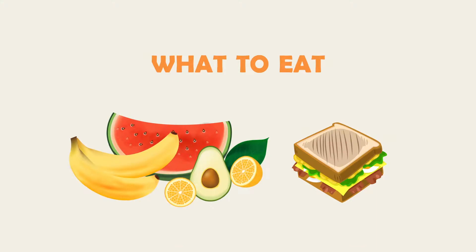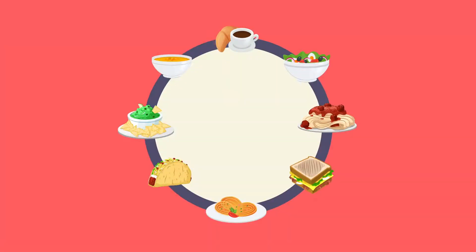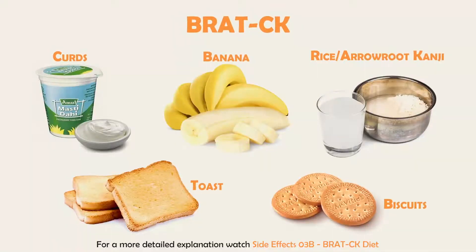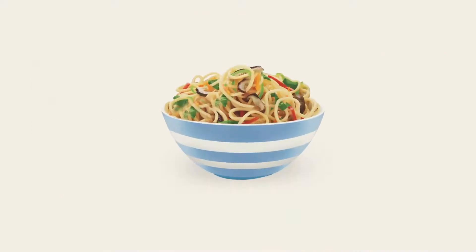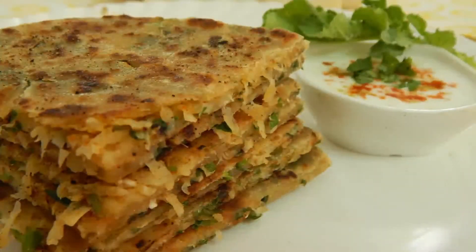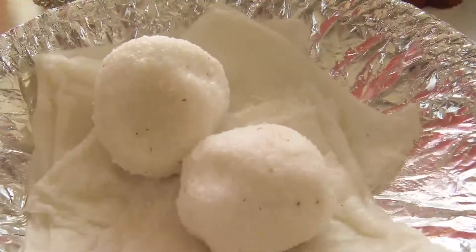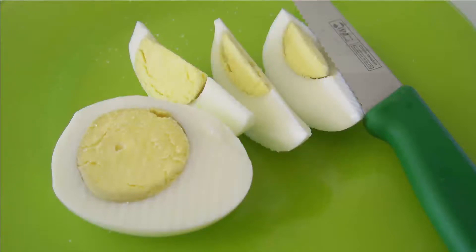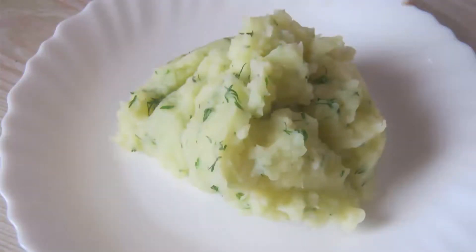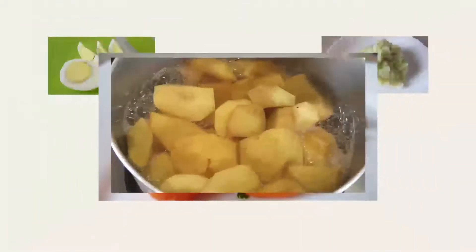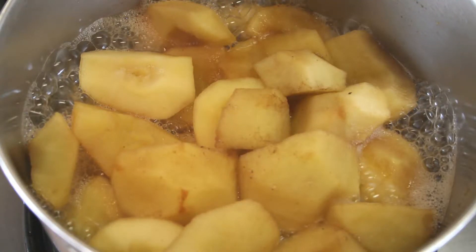Eat 6 to 8 small meals each day. Eat food at or near room temperature. Follow the BRAT CK diet. Other good options are noodles, poha, any preparation made out of wheat or rice flour, soy milk, hard-boiled eggs, boiled or mashed and baked potatoes without skin, boiled cooked carrots, cooked fruits without the skins, and mashed vegetables.